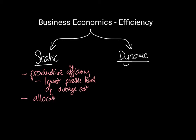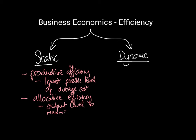Another type of static efficiency is allocative efficiency. When we think about allocative efficiency, we're not really thinking about each individual firm in isolation. The concept is that if all firms within an economy are allocatively efficient, then overall consumer welfare will be maximised. The allocative refers to how resources are allocated between products — essentially, is the industry producing the amount of output that maximises consumer welfare?